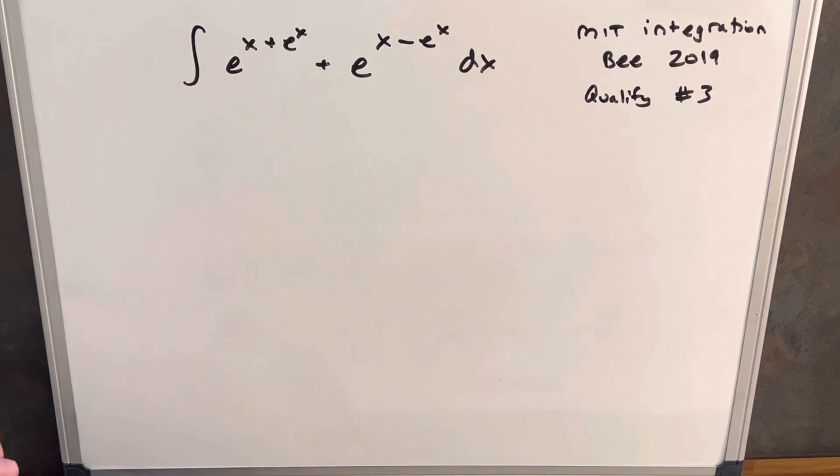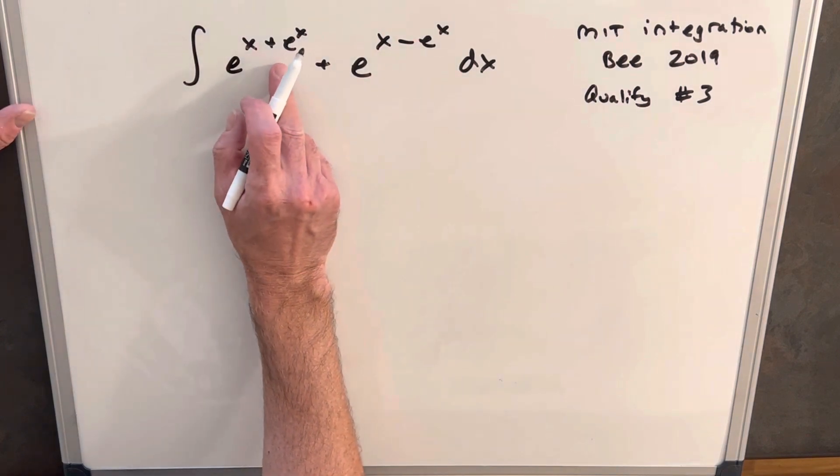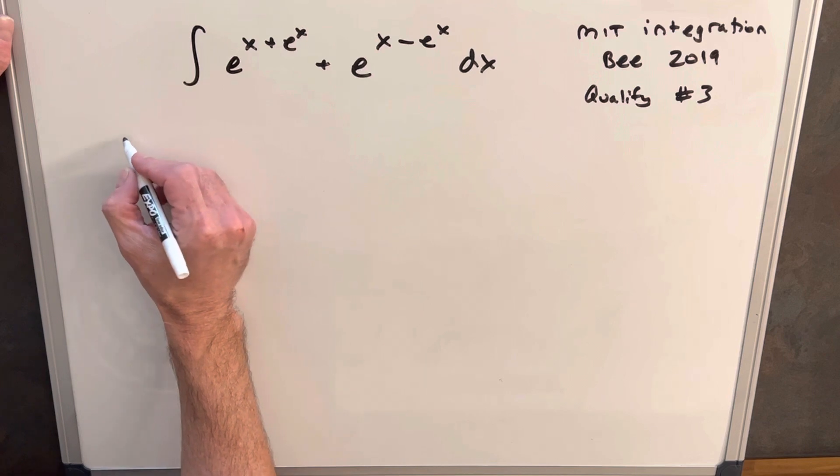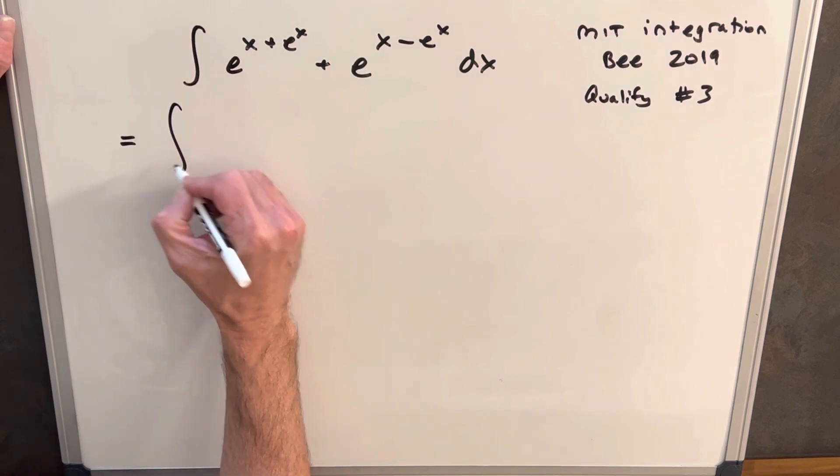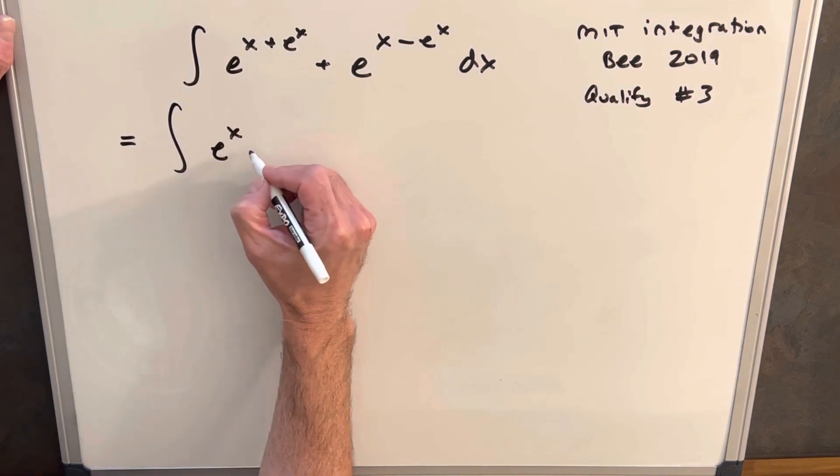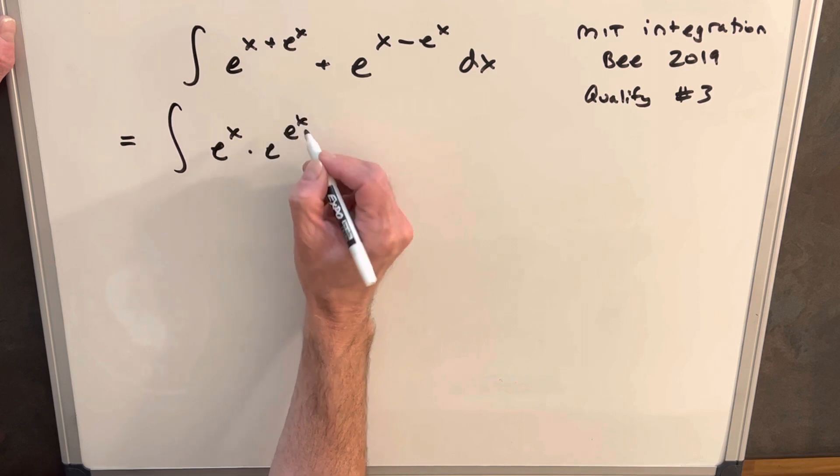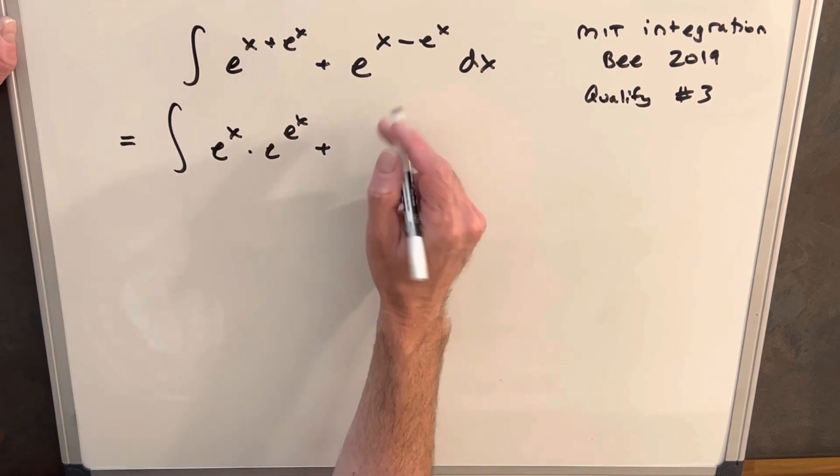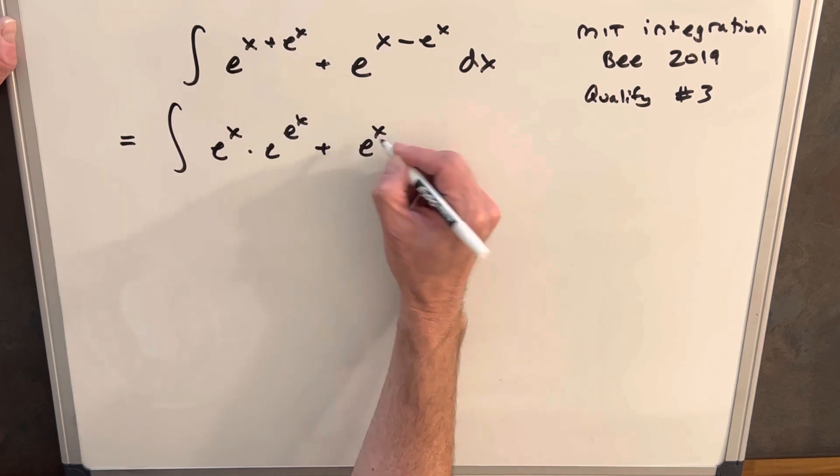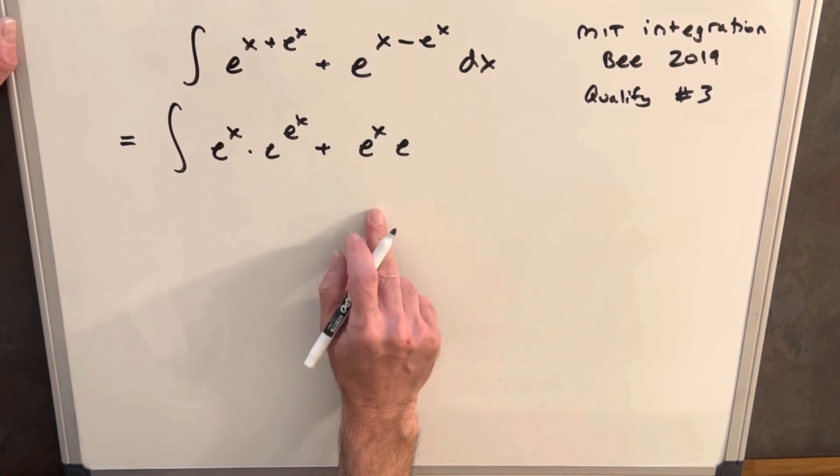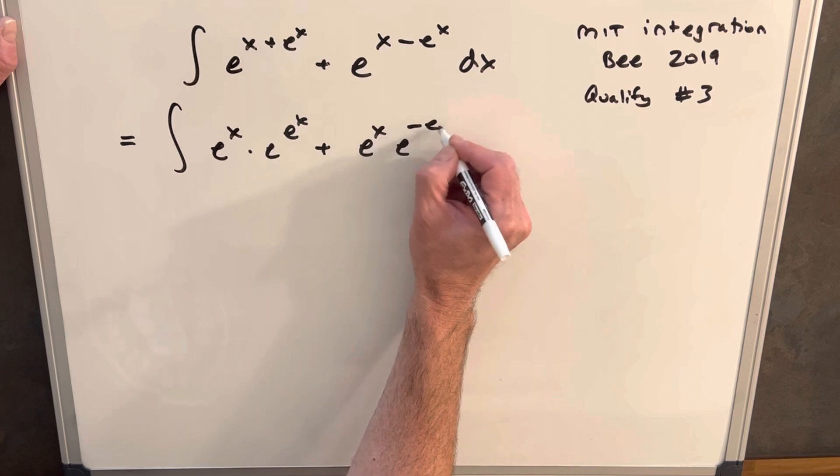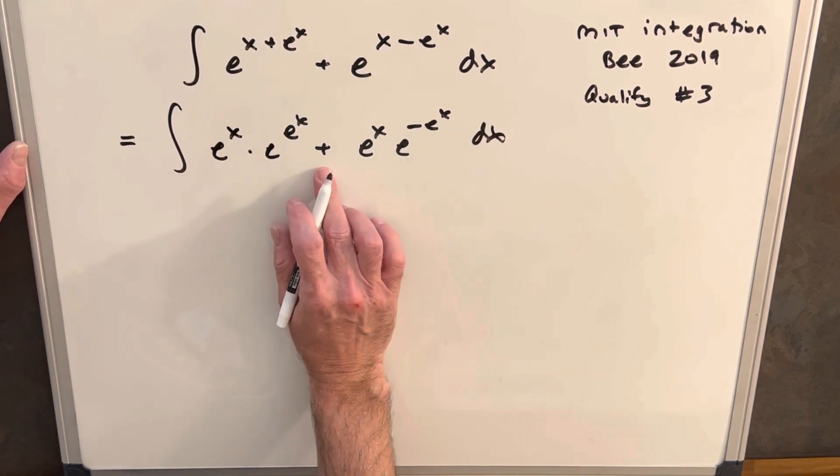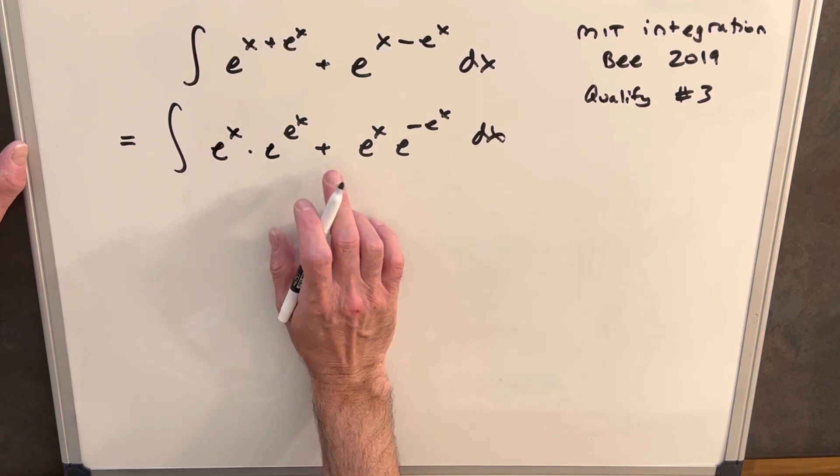I think before I do anything though I want to clean up. I don't like having where we're adding stuff in the exponents, I think that just kind of makes it confusing. So let's rewrite this as e to the x times e to the e to the x just by exponent rules, we're adding these together. And then for this one very similar, I could write this in the denominator but I'll just leave it this way. Notice we could split this into two integrals because we got this addition here but I think I'm gonna leave it, I think it's gonna be better this way.